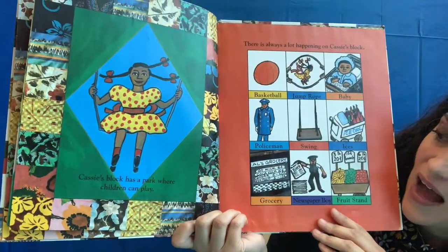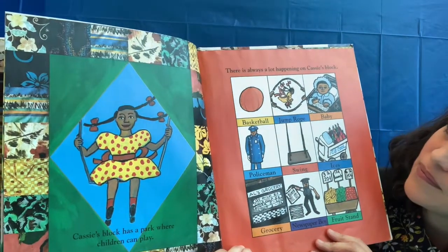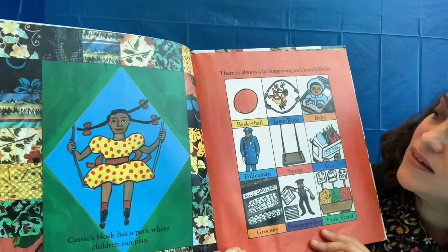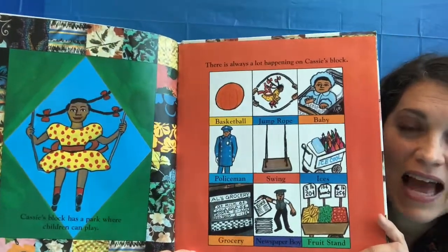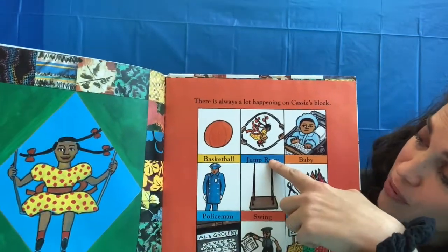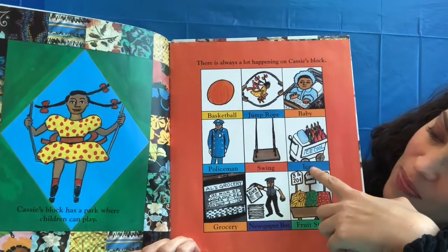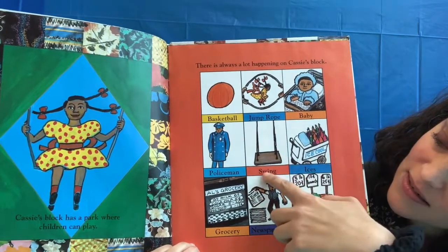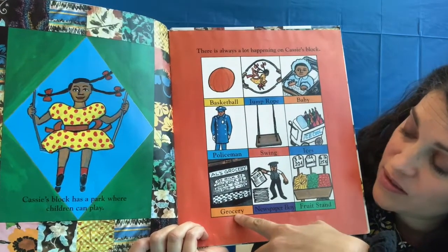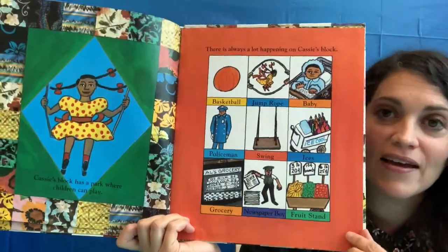Cassie's block has a park where children can play, and there's always a lot happening on Cassie's block. What kinds of things does Cassie do on her block? Play basketball, jump rope. There's a baby on her block, ices, swings, policemen, a grocery store, a newspaper boy, and a fruit stand.